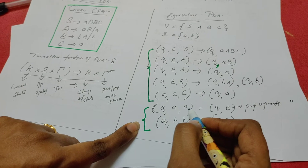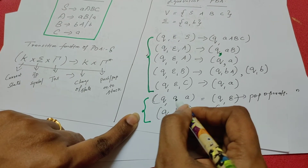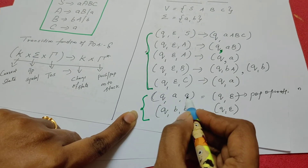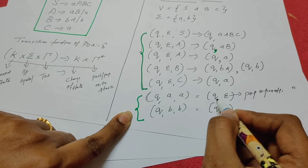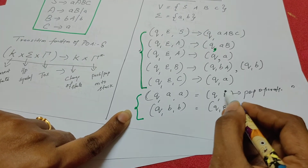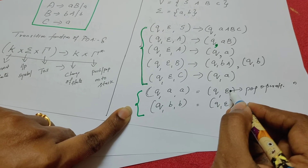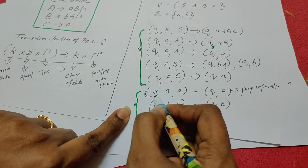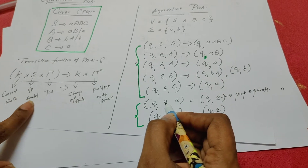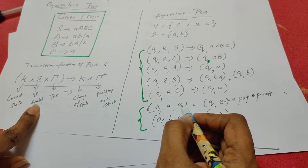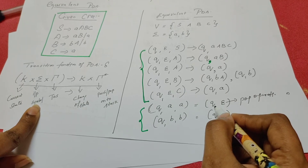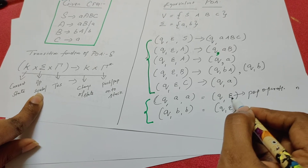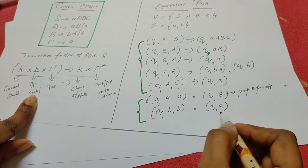Now let us write the transition rule for the terminals. There are two terminals, a and b. For every terminal, you write the rule as: Q, a, a → Q, epsilon. This epsilon means the top of the stack is replaced by epsilon, which is equivalent to a pop operation. So from state Q, when the input symbol from the input tape is 'a' and the top of the stack is also 'a', you pop it. Similarly, the same rule is written for terminal b.